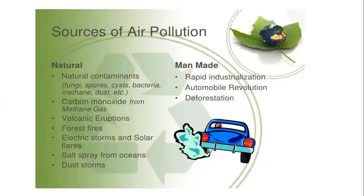Sources of air pollution are two types: natural and man-made. Natural sources include fungi, bacteria, methane, dust, carbon monoxide from natural gas emissions, volcanic eruption, forest fires, electrical storms, solar flares, soil spray, and dust storms. Man-made sources include rapid industrialization, automobile revolution, and deforestation.